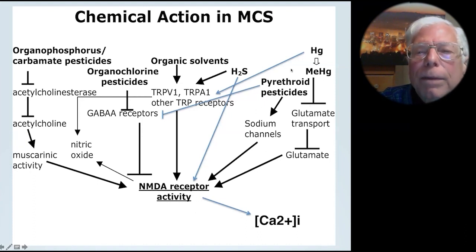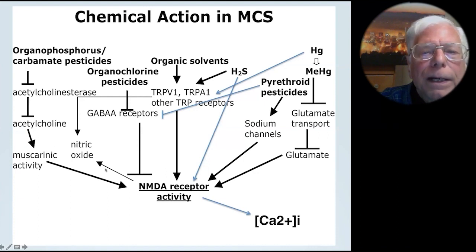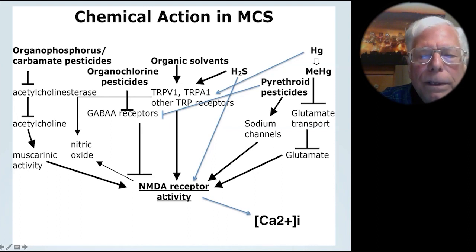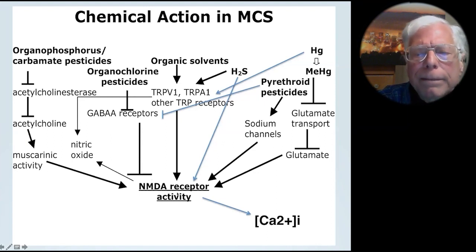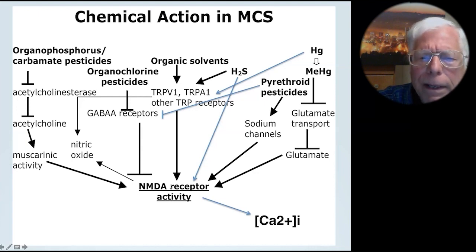Mercury and hydrogen sulfide act along two different pathways. The organic chlorines, organophosphorus, and carbamate pesticides all act to produce increases in intracellular calcium and consequently nitric oxide as well.